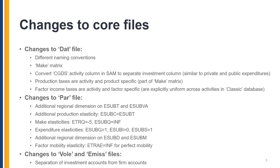Note that in the GEMPACK version of the database and the model, perfect substitutability is given by the value zero, because in the GEMPACK version the function has been inverted to deal with perfect substitution. We've also given the user more flexibility regarding the expenditure functions for government, investment, and the formation of trade and transport services. These are now generic CES expenditure functions with the relevant elasticities E sub G, E sub I, and E sub S, with default values of one, zero, and one, which were the default values in the classic version of the model.